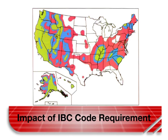Seismic and wind requirements vary with location. The pink, blue, and green areas on the map are subject to the seismic standards, while the areas along the coast in white have wind standards in effect.